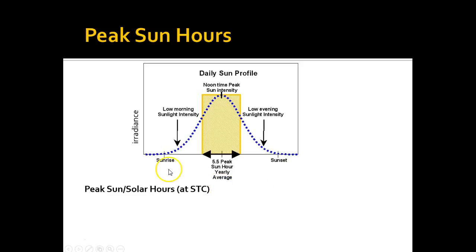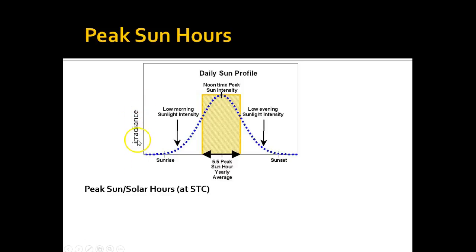On the x-axis we have hours — hours of the day, you know, sunrise and sunset. This obviously could change throughout the year, but this is hour of the day, and this is the irradiance level. So this is the power, basically solar power — watts per meter squared — that's hitting the surface at any given time.